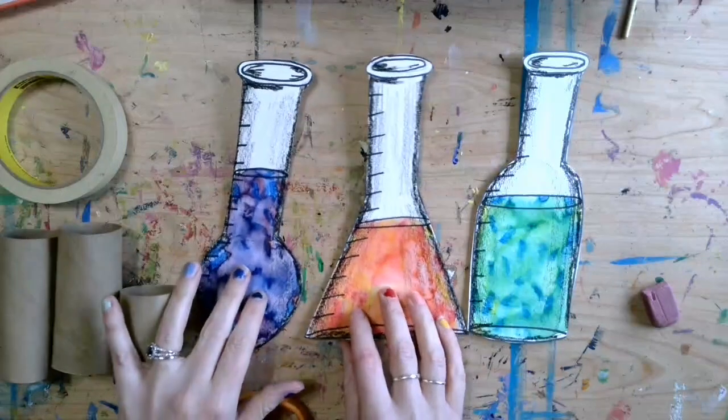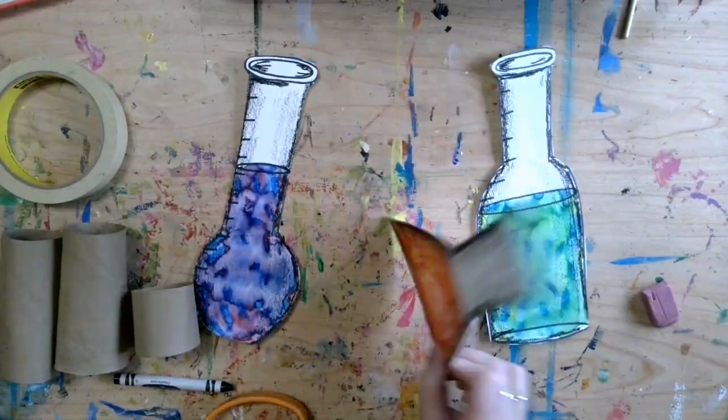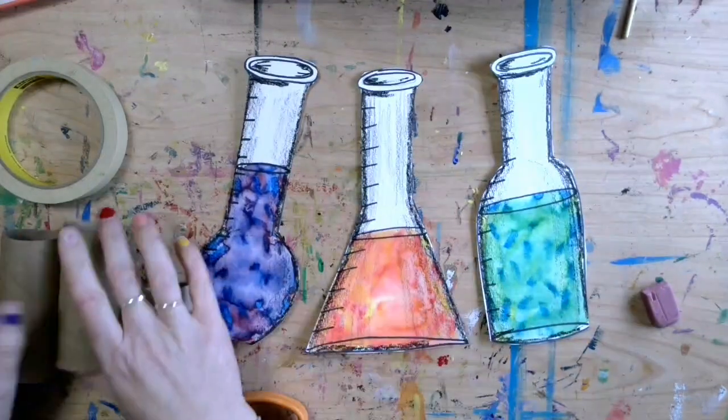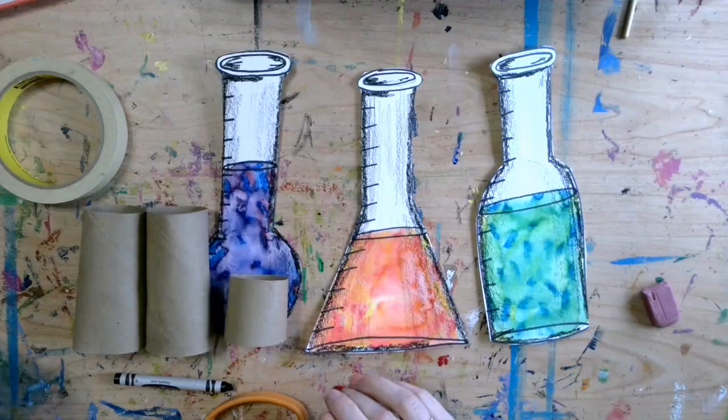Okay, so I've cut out all of my beakers. And now I want to be able to make them stand upright. So I'm going to be using some toilet paper tubes that I have at home. And I'm going to be taping them to the back.